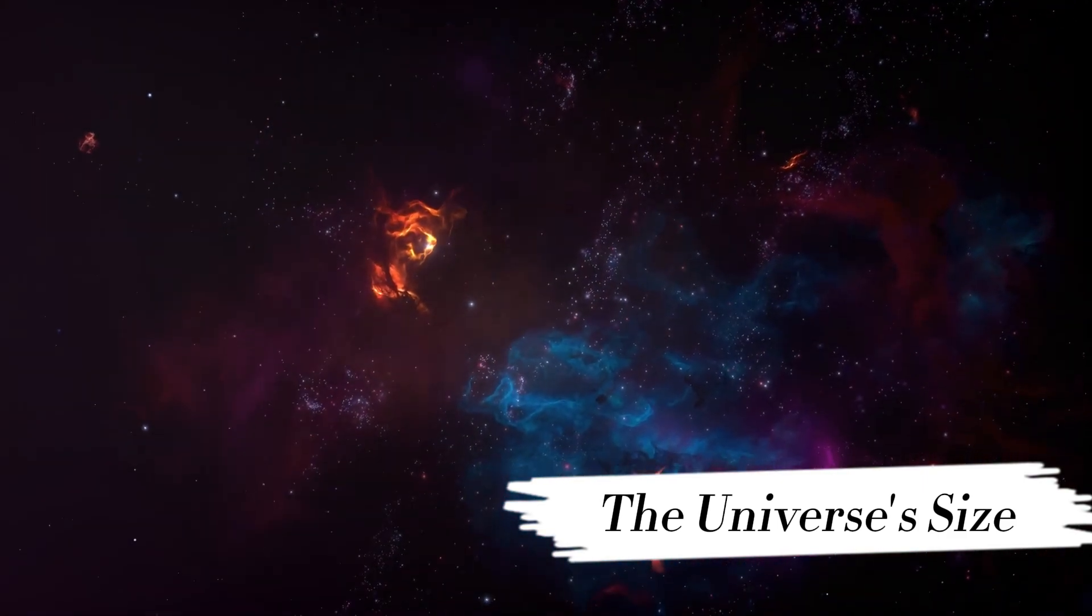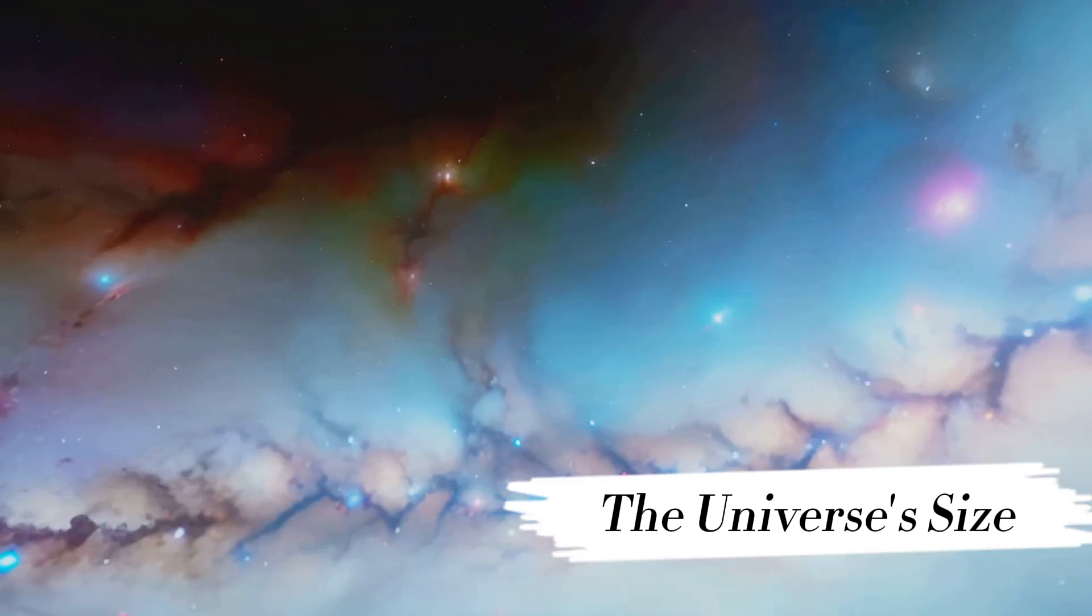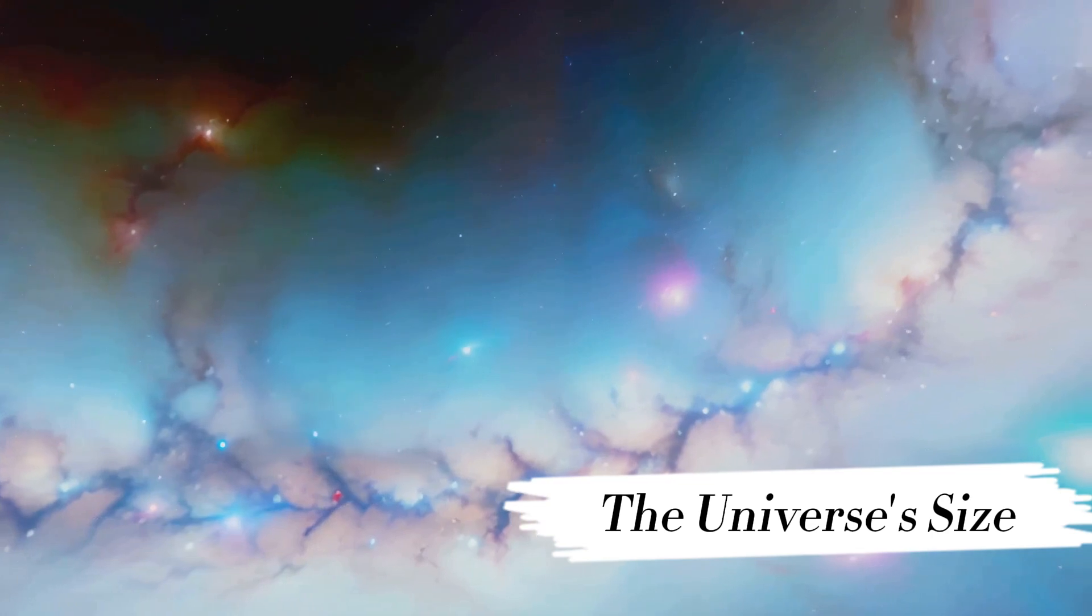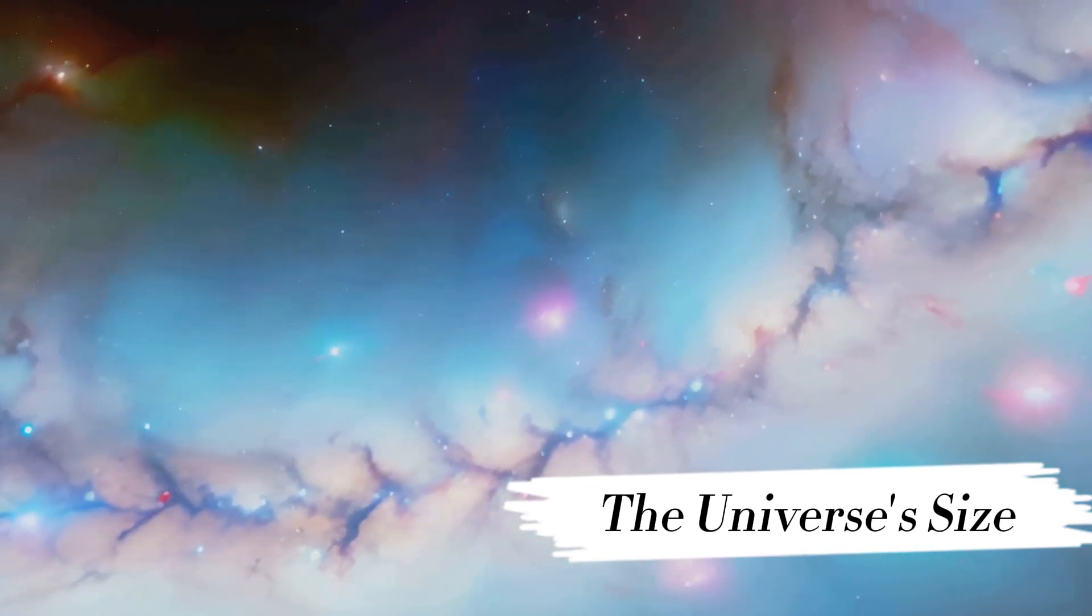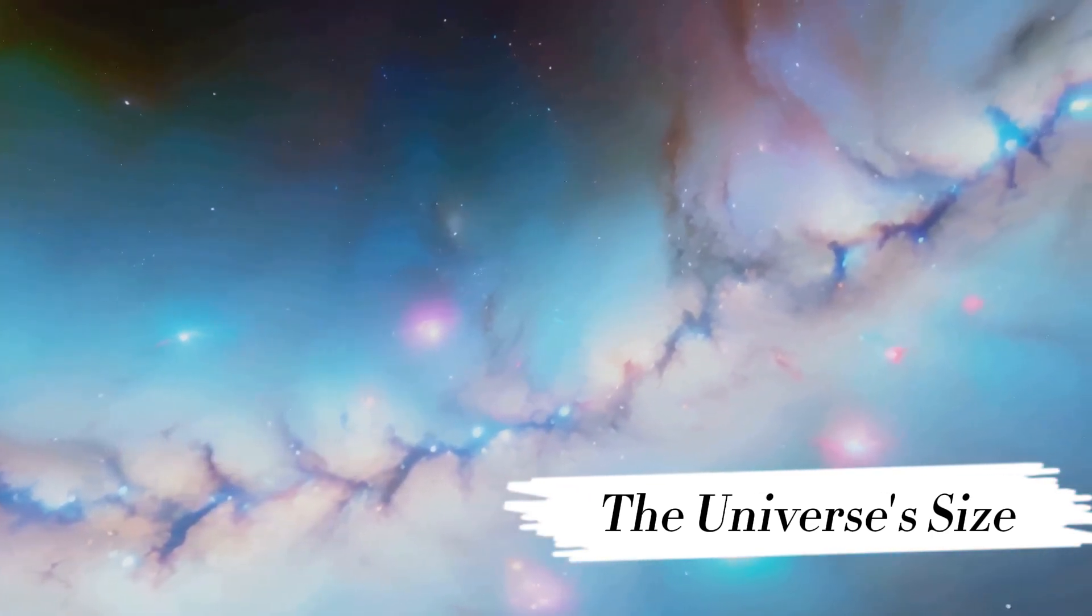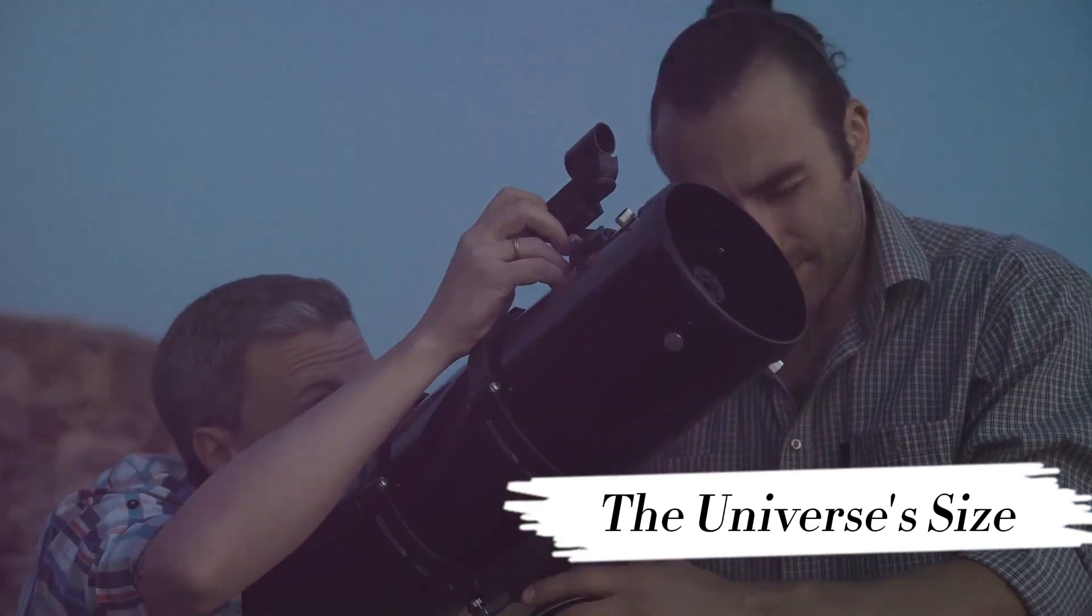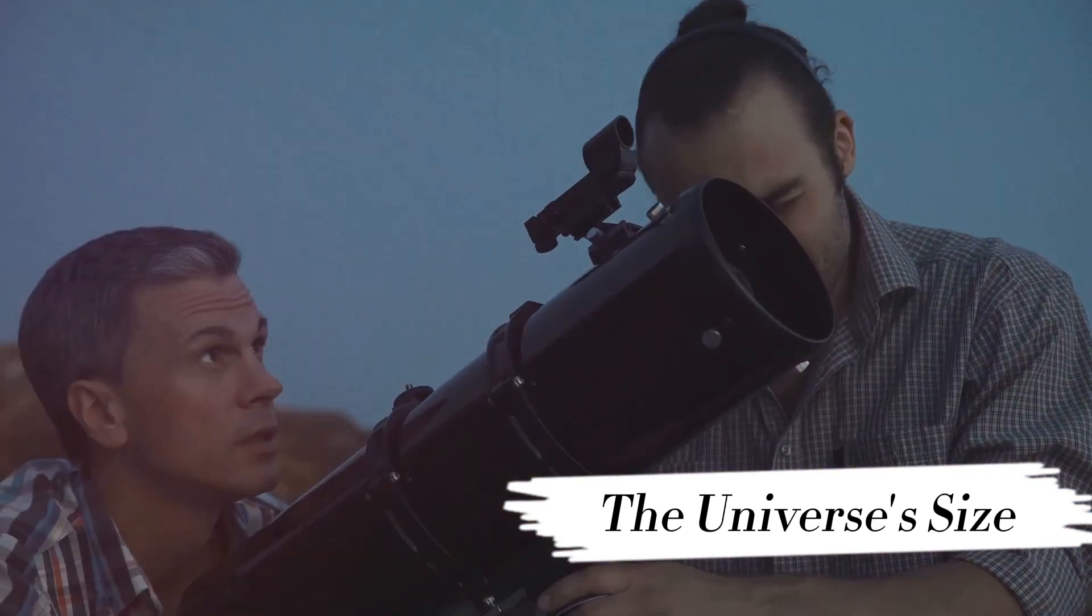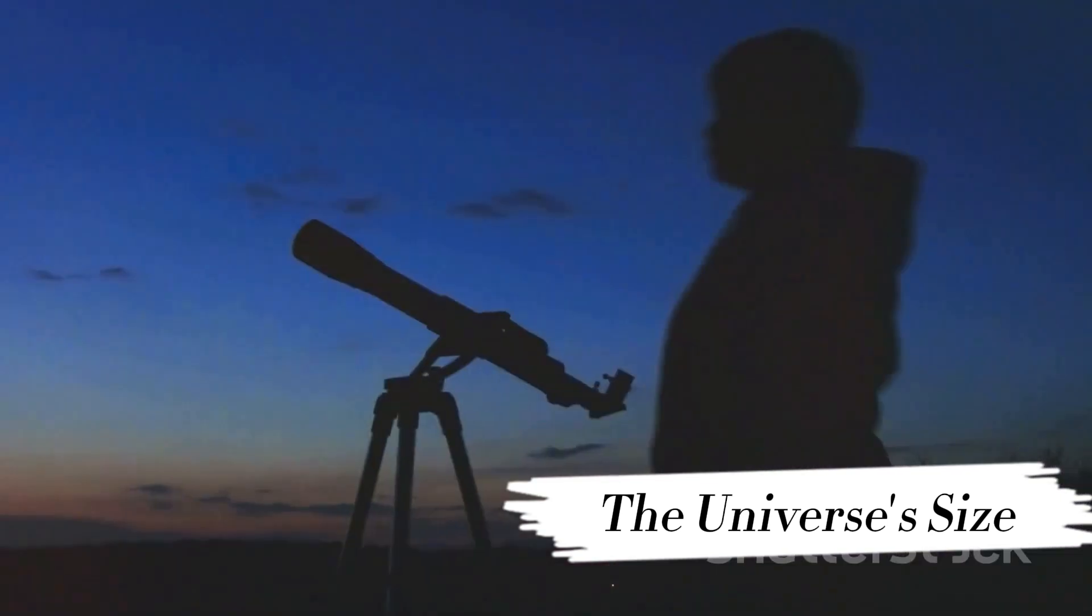Its expanse is so mind-bogglingly enormous that it stretches beyond our human capacity to visualize. It's like trying to picture all the grains of sand on earth multiplied by all the stars in the sky, and even that doesn't come close. So, if we can't visualize it, how do we measure it? Well, we use a unit called a light year, which is the distance light travels in one year.